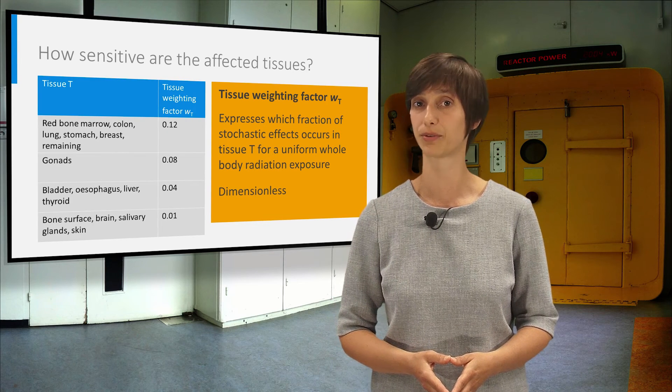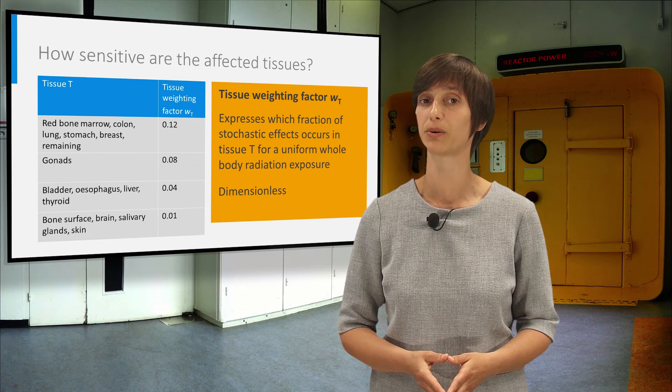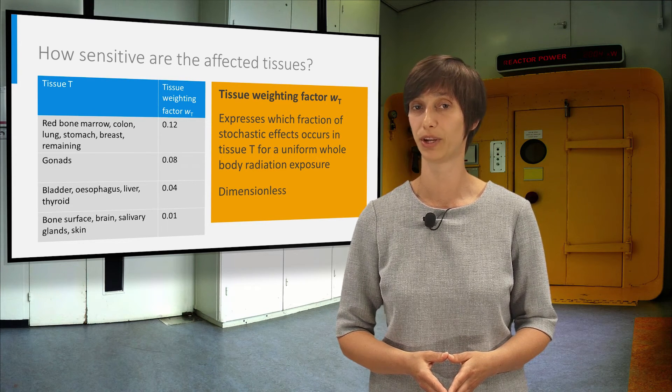In the table on the left, you can see, for instance, that there is 12 times more chance for stochastic effects in the red bone marrow or in the stomach than in the brain or the skin.